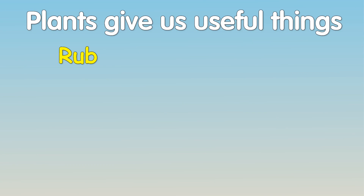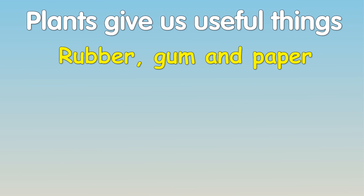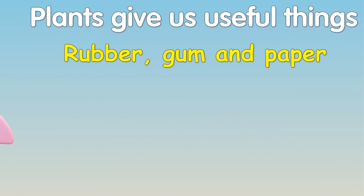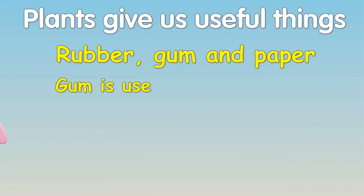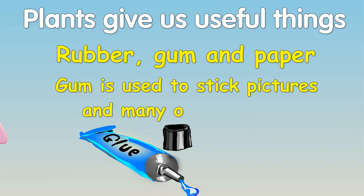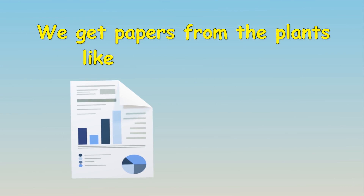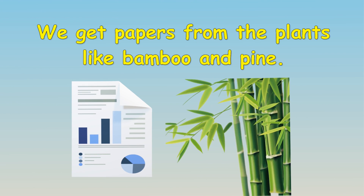Plants give us rubber, gum and paper. Rubber is used for making tires, tubes and erasers. Gum is used to stick pictures and many other things. We get paper from plants like bamboo and pine.